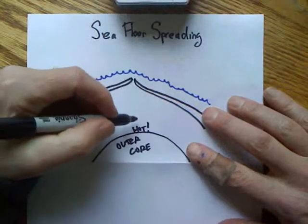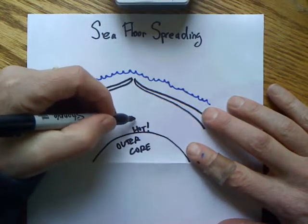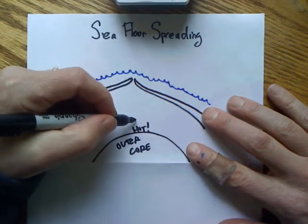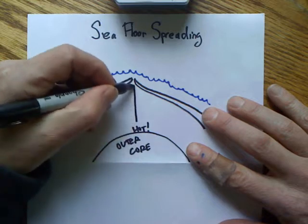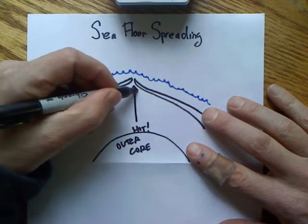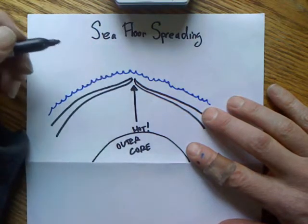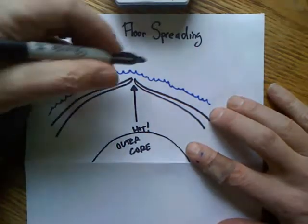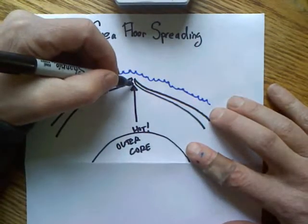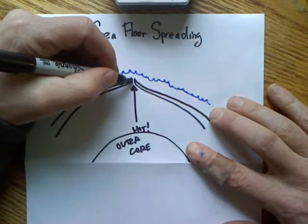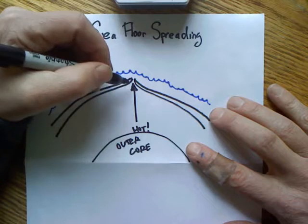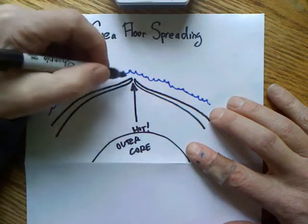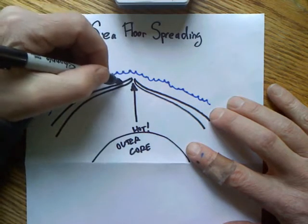Since it's extra hot right here, that's going to cause the material — the matter in the mantle — to rise. Things that are hotter than their environment get less dense, so they rise. When it rises, some of it is going to pour out the top between these two plates, and when it cools it's going to make lava.